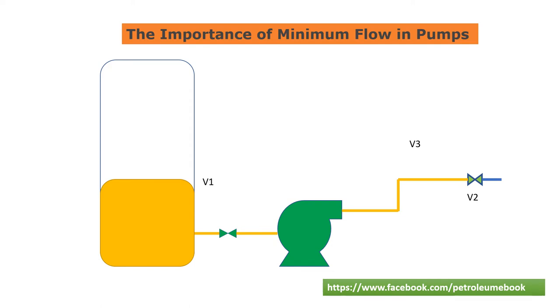Cavitation is the formation of bubbles in a fluid when the pressure drops below its vapor pressure. When these bubbles collapse, they create shockwaves that can erode the impeller and other internal components of the pump.